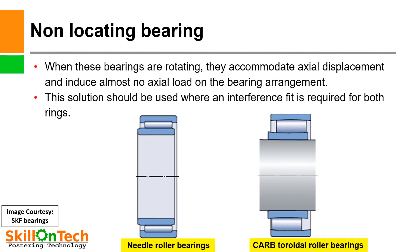Some more non-locating bearings include the needle roller bearing and the CARB toroidal roller bearing. When these bearings are rotating they accommodate axial displacement and induce almost no axial load on the bearing arrangement, providing axial displacement in both directions. This solution should be used where an interference fit is required for both rings. In the CARB toroidal roller bearing, the inner and outer race are free to move axially in both directions.